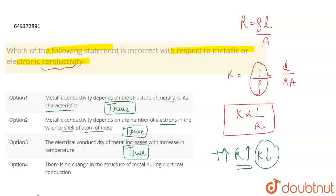The next one is that there is no change in the structure of the metal during electrical conduction. This statement is correct. The statement incorrect is in our option number 4. That's all for the question.